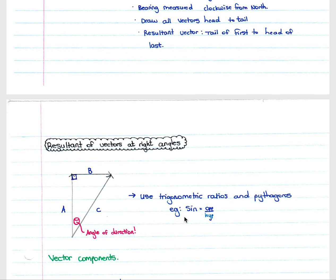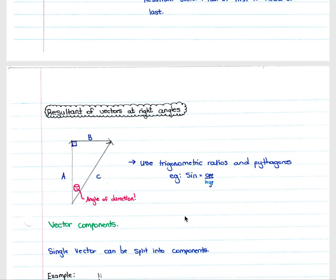For resultant vectors at right angles it is much easier, as you don't necessarily have to draw it out. You can use trigonometric ratios and Pythagoras to solve for the resultant vector as well as the angle. You must always include this angle when giving your resultant vector.